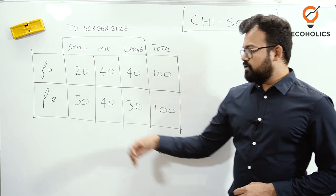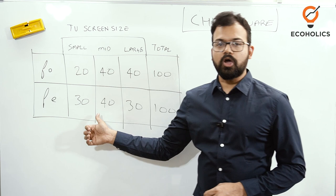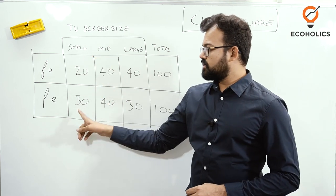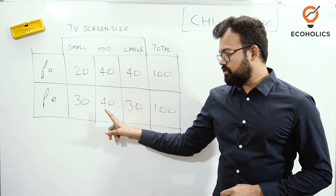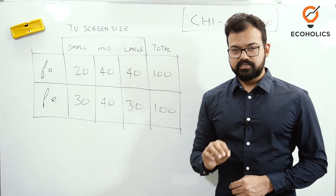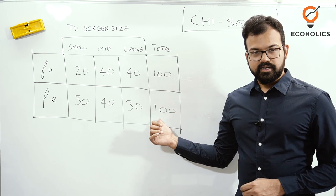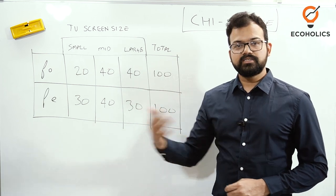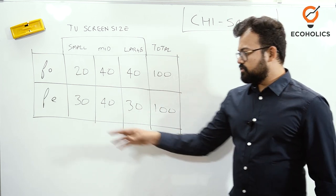Imagine that you are a shopkeeper and this is your expected stock limit. For small screen size, you need 30 televisions. On the same lines, 40 televisions for mid-size screen and 30 televisions for large size screen. It means you want to order 100 to deliver or sell in your shop. This is the expected one.